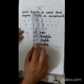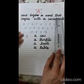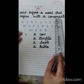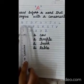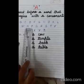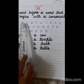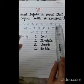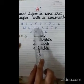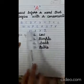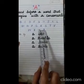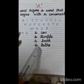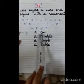A is used before a word that begins with a consonant. Consonants are all the alphabets besides the vowels — that is B, C, D, F, G, H, J, K, L, M, N, P, Q, R, S, T, V, W, X, Y, Z. These all are consonants. All the words which begin with a consonant, we use A before them.